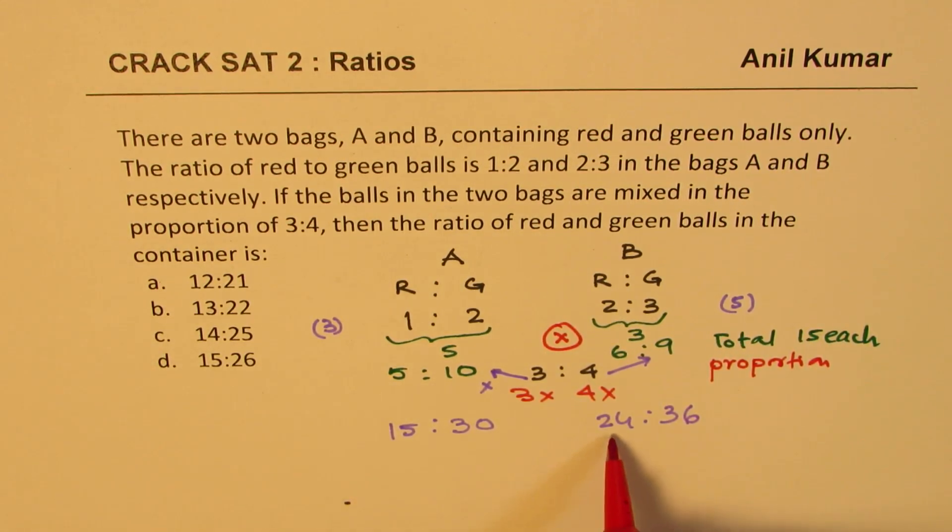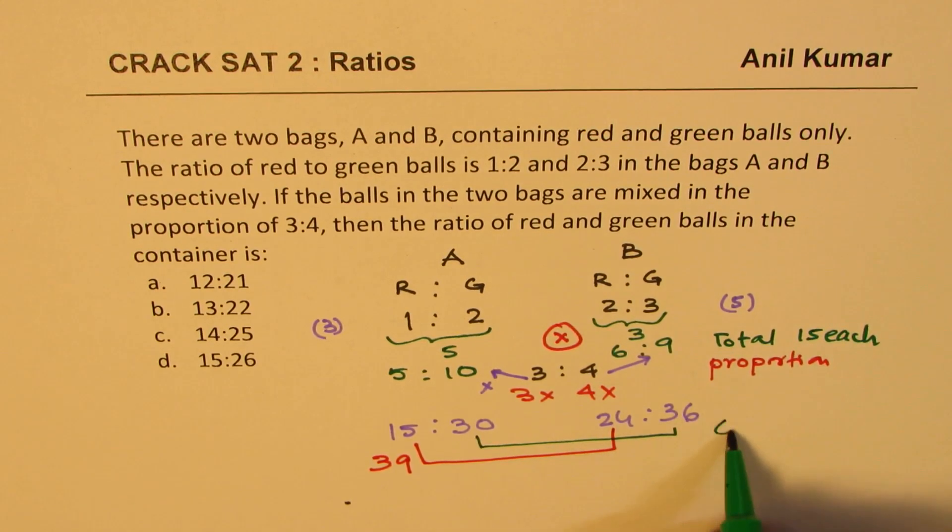So now we know the ratio of red and green balls. So red balls, we'll add these red balls. How much do you get? When you add 24 and 15, you get 4 and 5 as 9, 2 plus 1 as 3. On the other hand, if you add 30 and 36, you get 66.